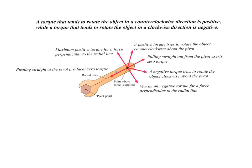Torque is a vector quantity with a sign and direction. A torque that tends to rotate an object counterclockwise is positive; a torque that tends to rotate it clockwise is negative. Pushing straight at the pivot point produces zero torque. Maximum positive torque occurs when the force is perpendicular to the radial line and causes counterclockwise rotation. Clockwise rotation gives negative torque, and torque decreases as the force angles away from perpendicular to the lever arm.